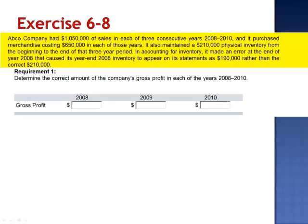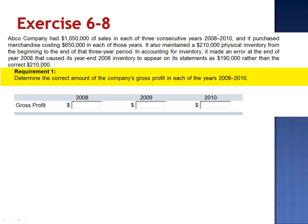Exercise 8. EBCO Company had $1,050,000 of sales in each of three consecutive years — 2008, 2009, and 2010 — and it purchased merchandise costing $650,000 in each of those years. It also maintained a $210,000 physical inventory from the beginning to the end of that three-year period. In accounting for inventory, it made an error at the end of year 2008 that caused its year-end 2008 inventory to appear on its statements as $190,000 rather than the correct $210,000.